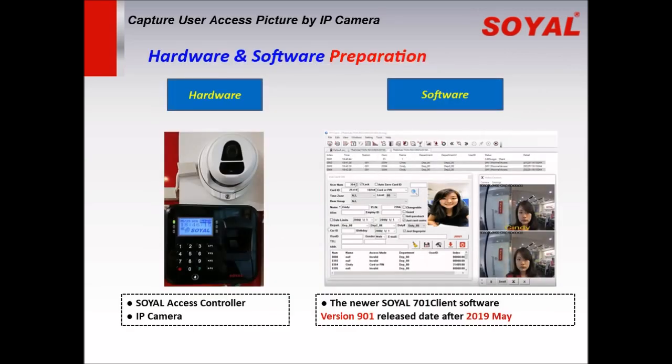Hardware and software preparation. For hardware, we need to prepare a Soya access control device including a fingerprint controller, car controller with LCD screen with keypad or without keypad, and also an IP camera. For software, the old software does not support the new function, so we need to install the newer Soya 701 software, version 901, released after May 2019.